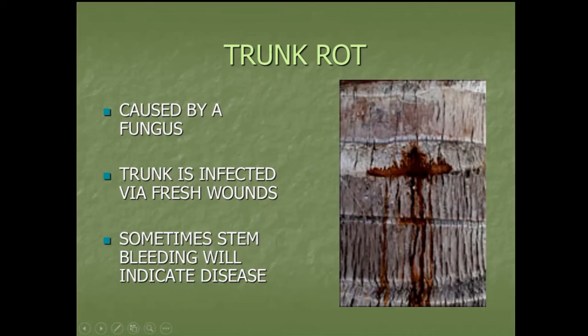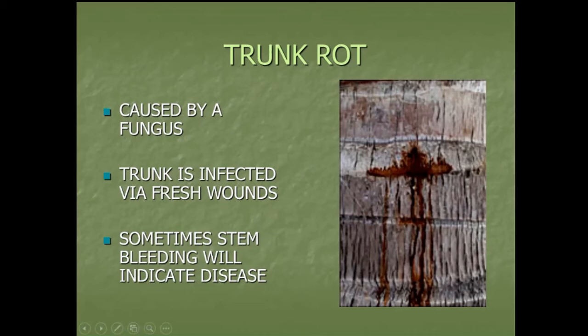So we've now talked about nutritional problems and diseases. Let's talk about insects. The insects that most likely can affect your palms are: palm leaf skeletonizer, palmetto weevil, red palm mite — a rather new bug — and rugose spiraling whitefly, also a newer issue. That's not to say other insects like scale or aphids can't affect palms, but for the most part palms are large enough that an infestation of those won't cause significant damage.